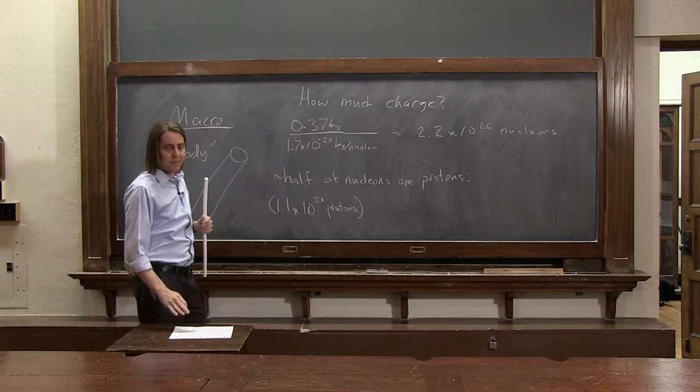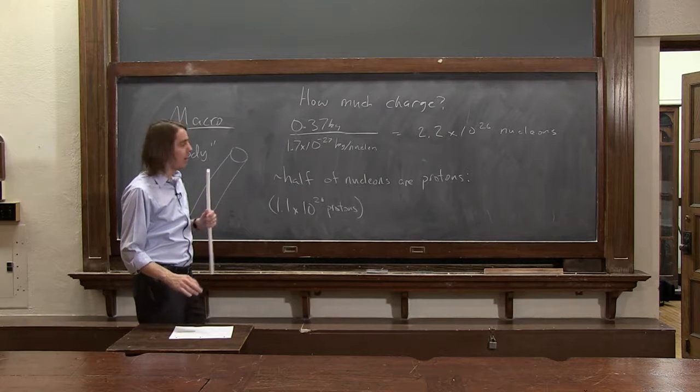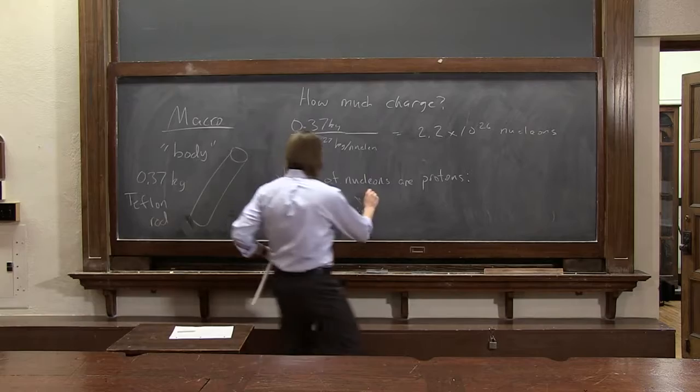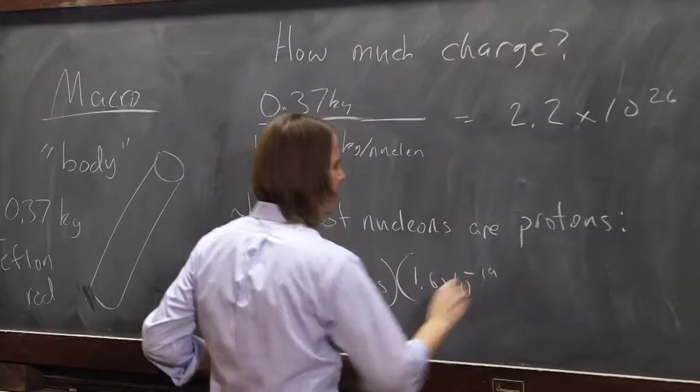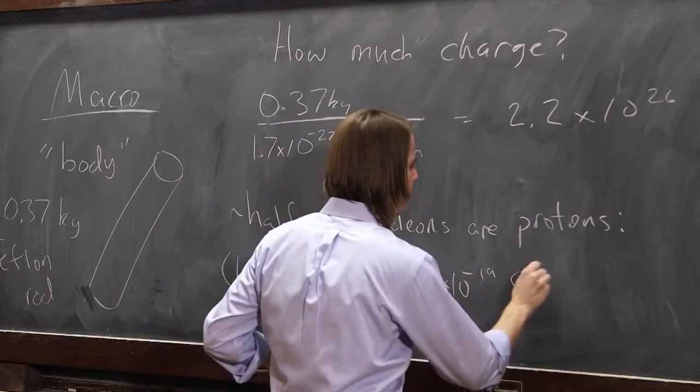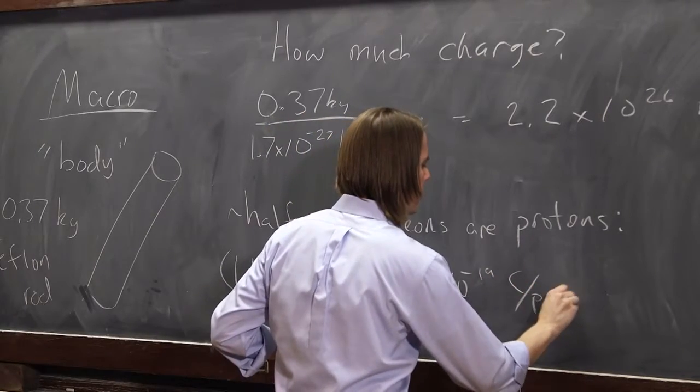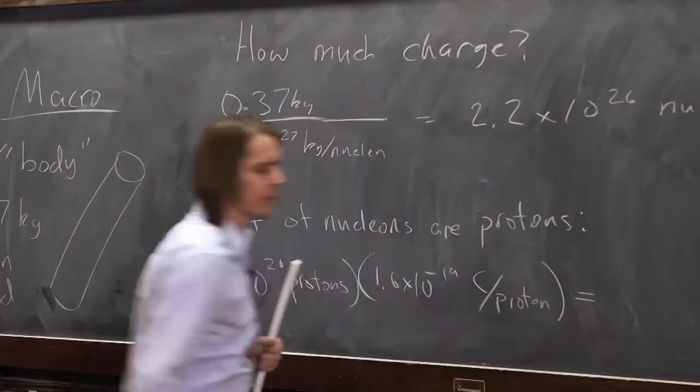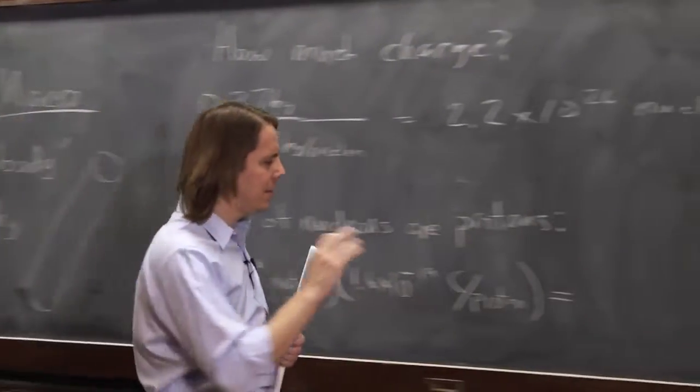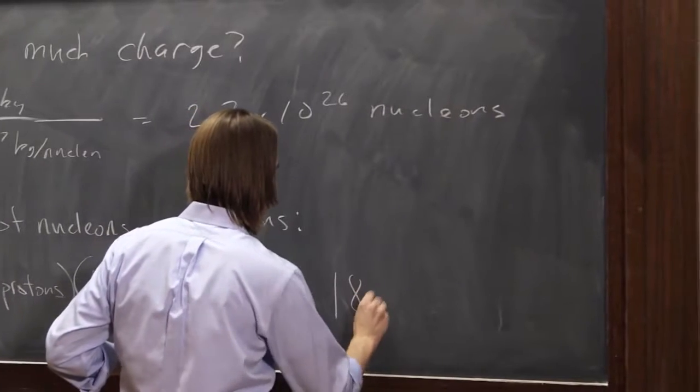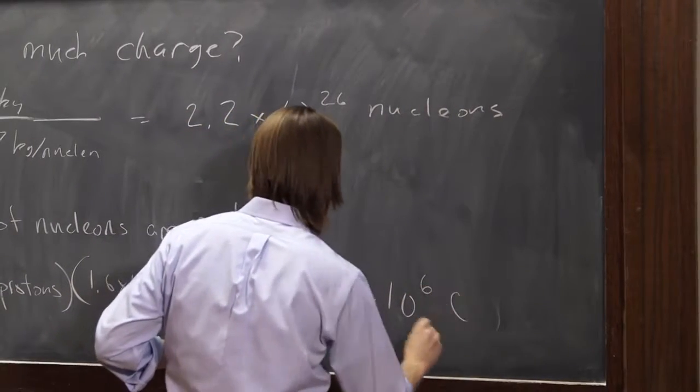And if that's true, now we can figure out the charge because each one has a charge of 1.6 times 10 to the minus 19 coulombs per proton. So if you multiply those two, you end up with 18 times 10 to the 6 coulombs.